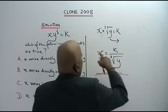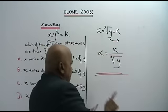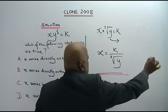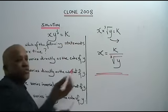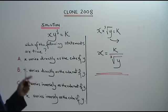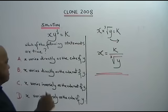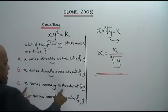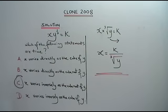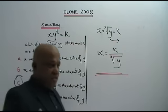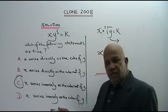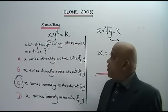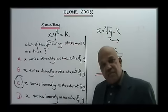From here you get x varies inversely as the cube root of y. So which is the answer? The answer is C, x varies inversely as the cube root of y. This is your answer. Very simple, very clear cut. I hope you understand. Thank you.